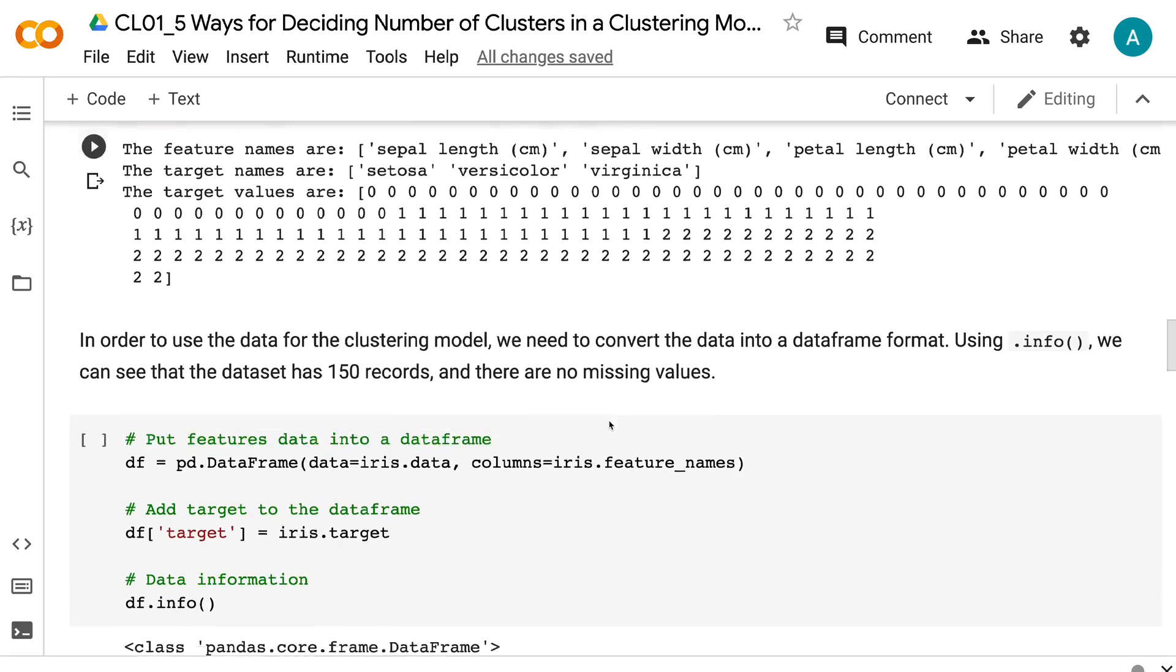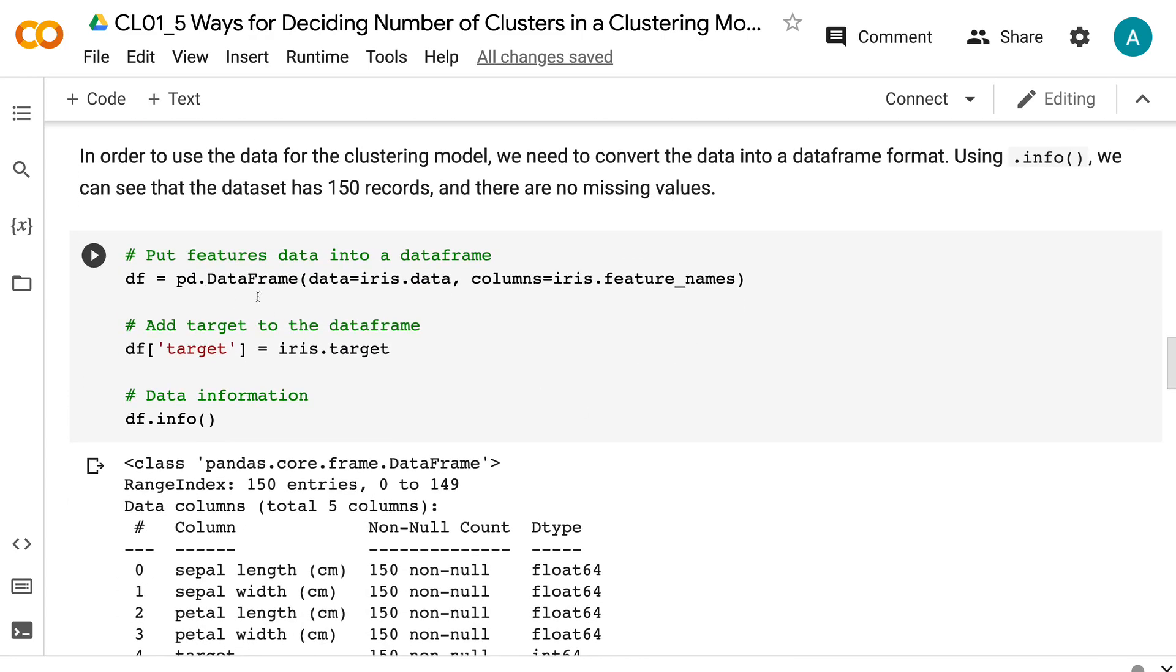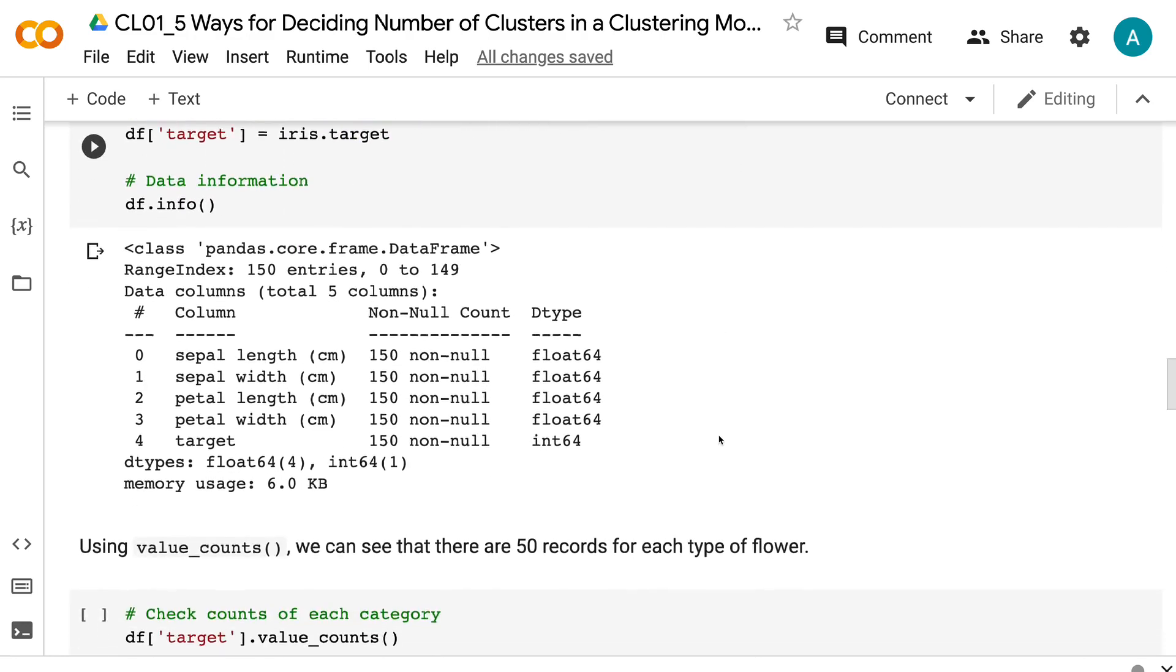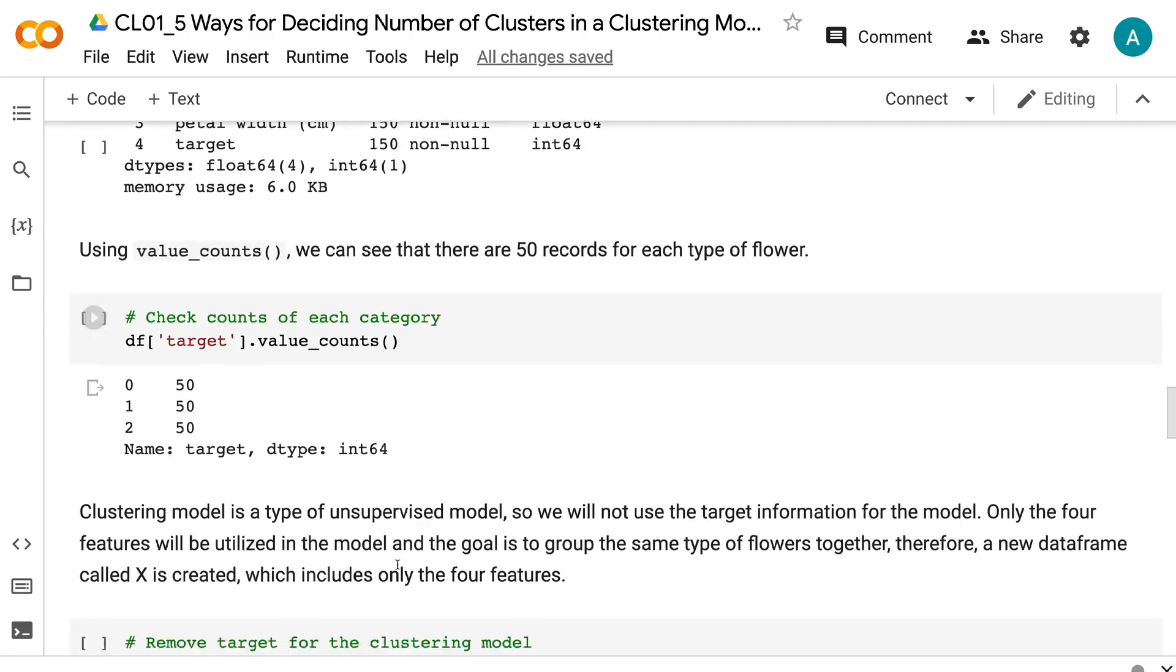In order to use the data for the clustering model, we need to convert the data into a dataframe format using .info. We can see that the dataset has 150 records and there are no missing values. Using value_counts, we can see that there are 50 records for each type of flower.